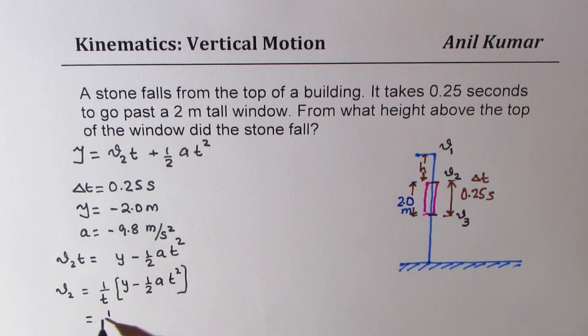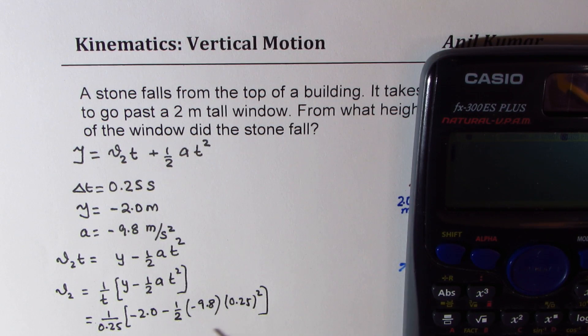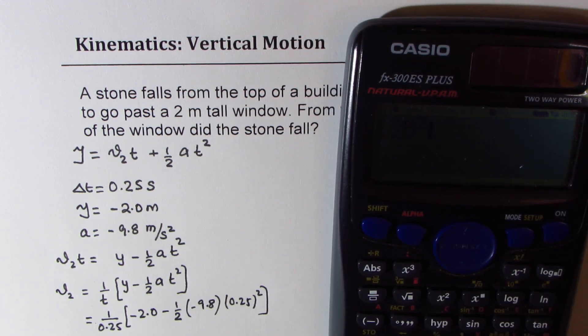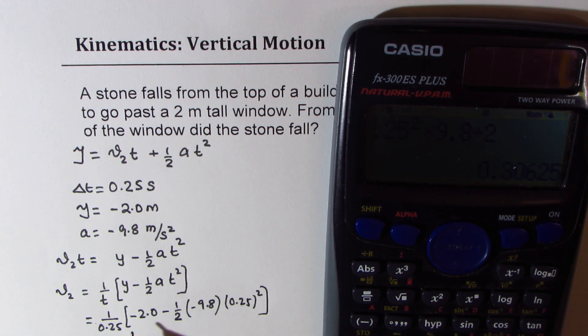You can substitute the values to calculate the answer. t is 0.25, so we have 1 over 0.25, y is minus 2.0, minus half of a which is minus 9.8, and t is 0.25 squared. Let's calculate. This minus minus becomes positive, so we have 0.25 squared times 9.8 divided by 2, which equals in decimals 0.306. We'll take away 2 from here, minus 2, and then divide by 0.25.